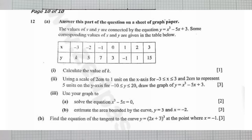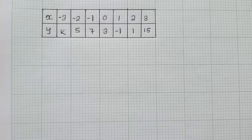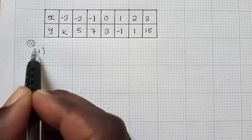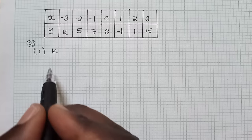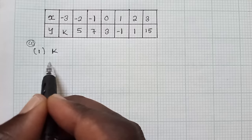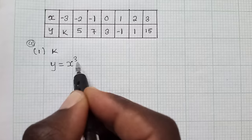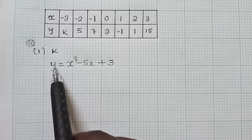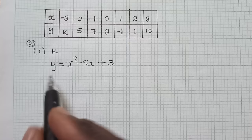So we have the first question here where we are asked to find the value of K. So how do you find the value of K? You must indicate your A1. So we are trying to calculate the value of K. Basically, you just get the given function which is this one right here. So when you get the given function, you substitute — we have a 3 here. You substitute the value of X. K here will represent Y.